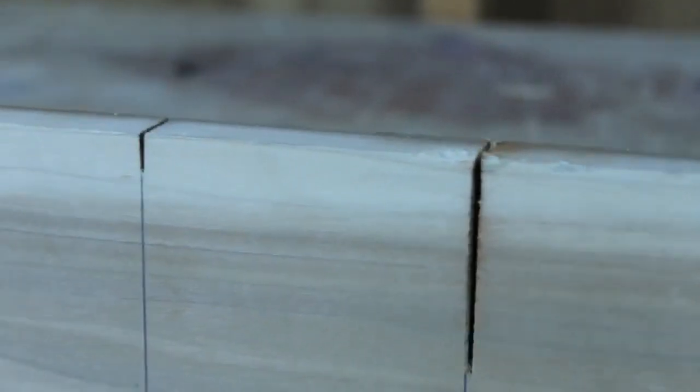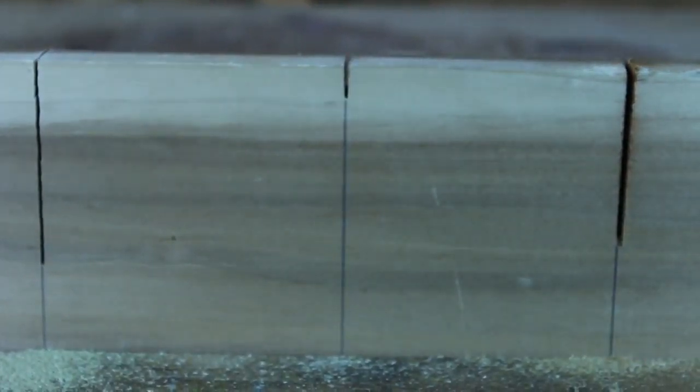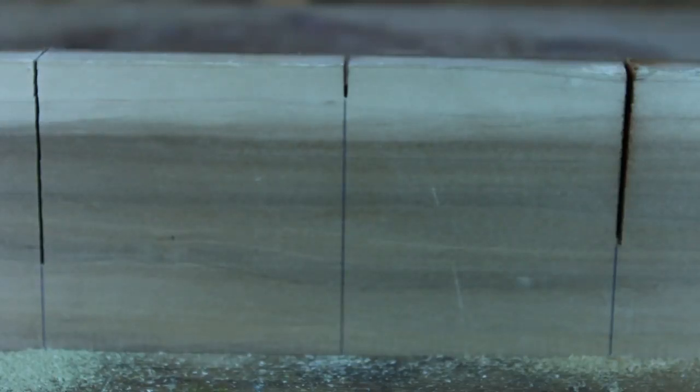So there you go from left to right, a saw that is set properly, a saw that is binding up too much and not set enough, and one that is over set. And you can see the difference in the size of the kerfs.